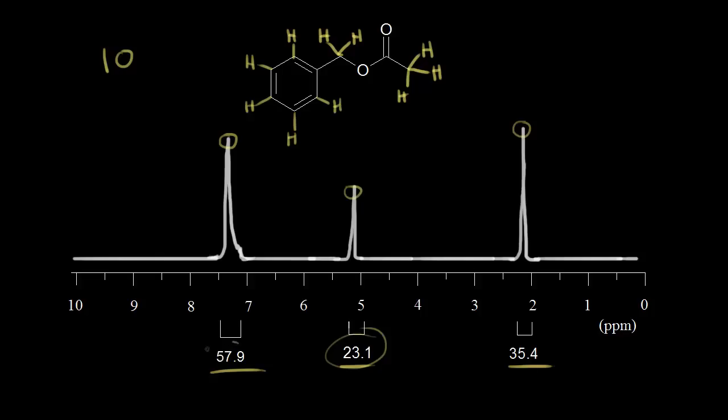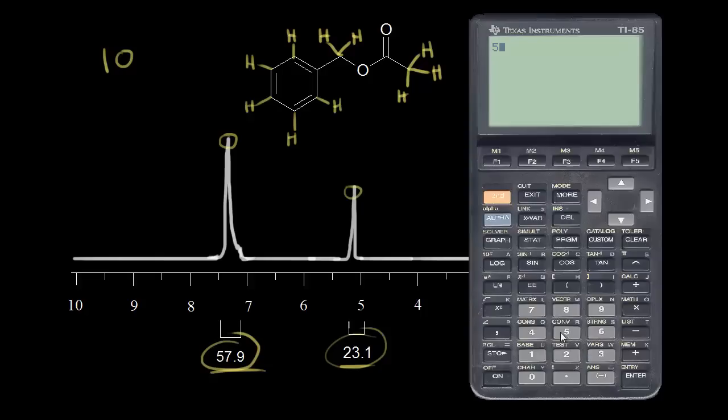We'll start with 57.9. So 57.9 divided by 23.1. So let's get out the calculator here. 57.9, divide that by 23.1, and we get 2.5.